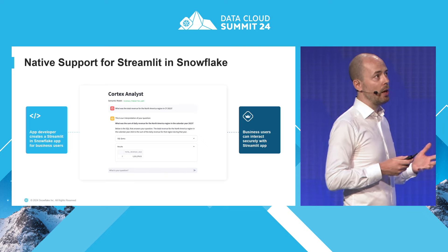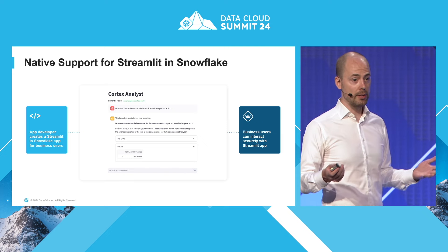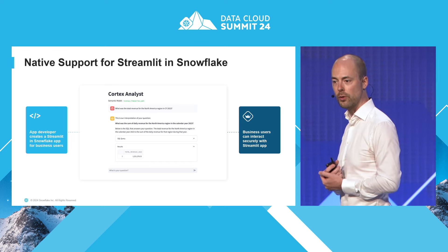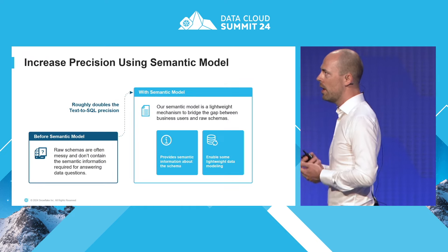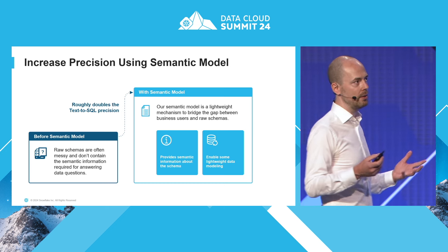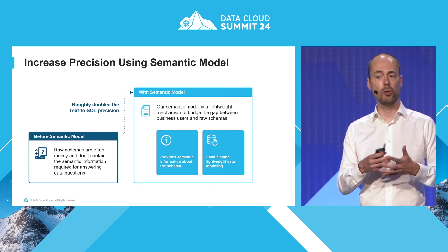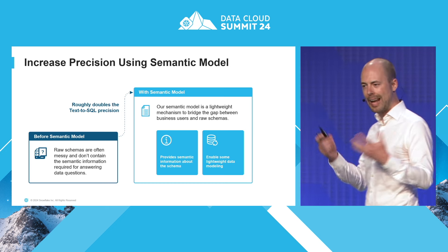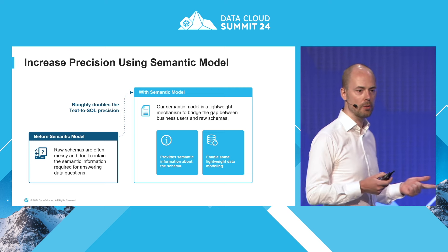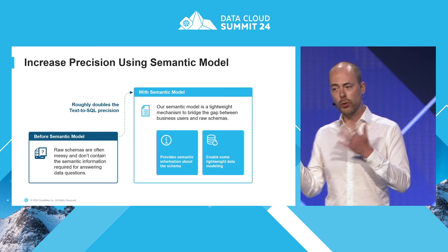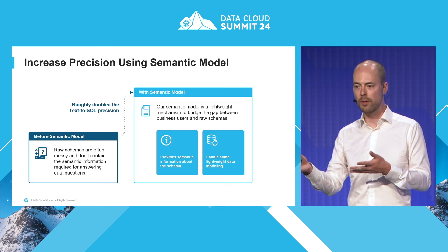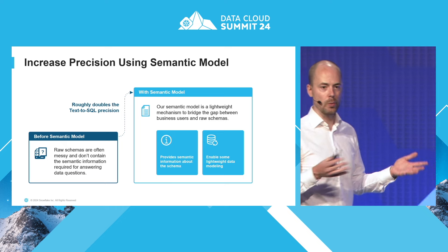Cortex Analyst is available in Streamlit in Snowflake, making it extremely easy to build a chat app in literally a few dozen lines of code that you can easily deploy using Streamlit in Snowflake. We're using a semantic model to get to the precision I talked about — a new concept that roughly doubles the Text-to-SQL precision, which is a huge deal. You can think of the semantic model as a lightweight mechanism to do data modeling: determining measure columns, dimension columns, filters you want to define, and capturing semantic understanding — bridging the gap between the vocabulary the business user uses and the underlying database schemas, which often tend to be messy.